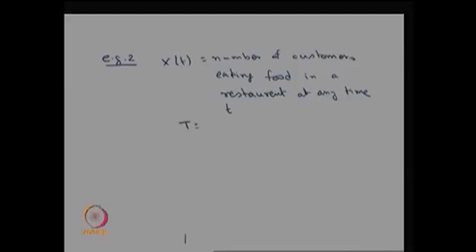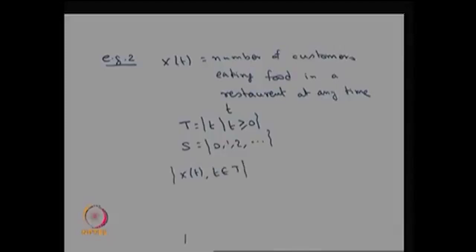The possible values of the parameter space T is t ≥ 0, and the possible values of the state space S are countably finite or countably infinite, since it is a count. Therefore, this collection of random variables over t forms a continuous-time, discrete-state stochastic process.